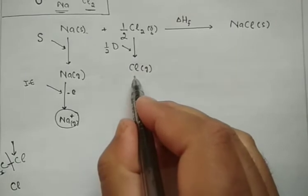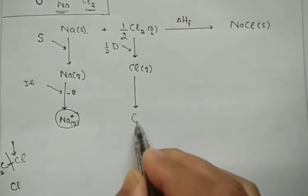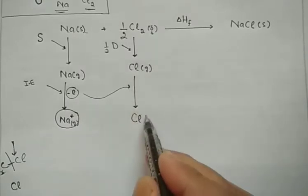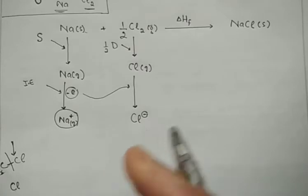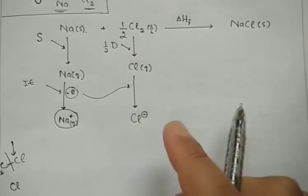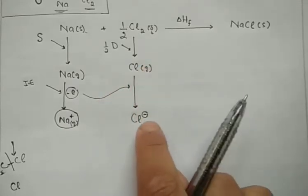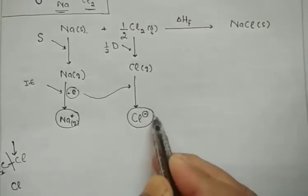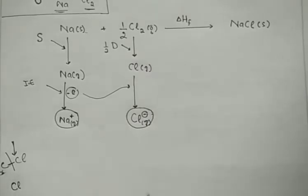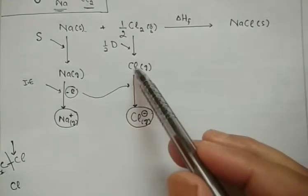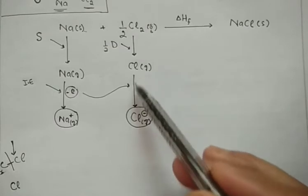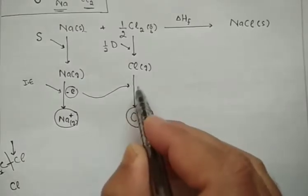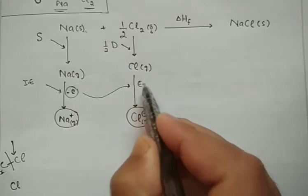Next, we have to convert the chlorine atom into its anionic form, Cl⁻. The electron released from sodium is accepted by chlorine. Chlorine's atomic number is 17, with 7 electrons in its outermost shell; it accepts 1 electron to form Cl⁻, completing its octet. When an atom takes an electron, energy is released — that is called electron affinity. Now we have both ions available in the gas phase.